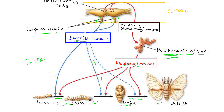Molting occurs in the larval or nymphal stages, but once the adult has been formed, there is no molting. This means that the adult insect does not grow — it remains the same size until it dies.